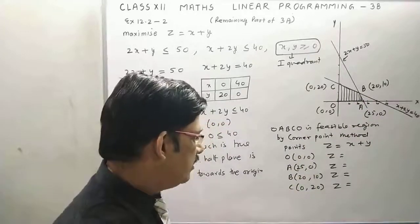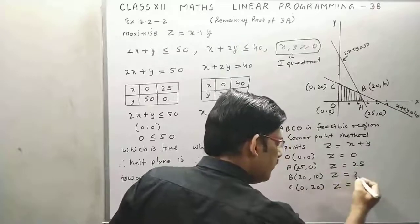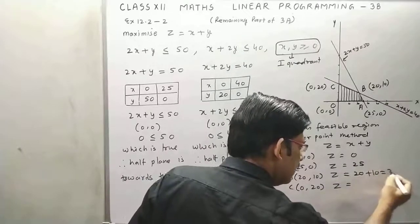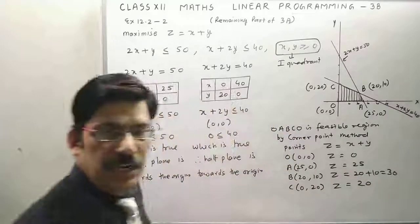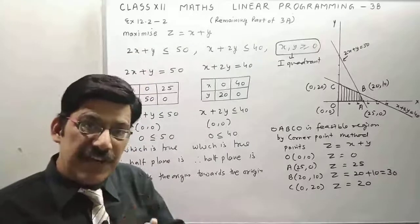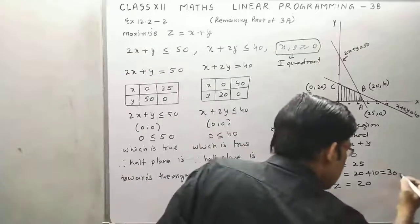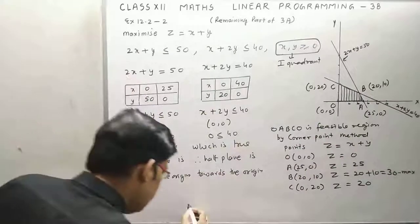I will calculate 0 plus 0 means 0, and 25 plus 0, 20 plus 10, it will be 30, and this last is 0 plus 20, 20. Now we have to find maximize or maximum number of cakes. Now this is maximum as you can see, therefore answer will be maximum.